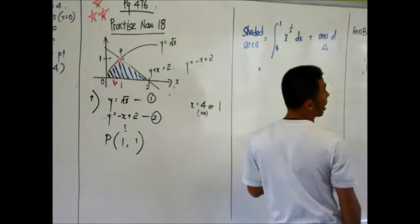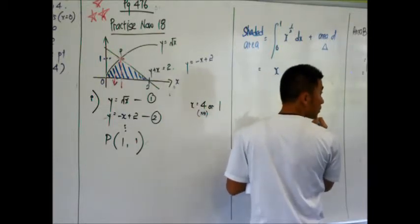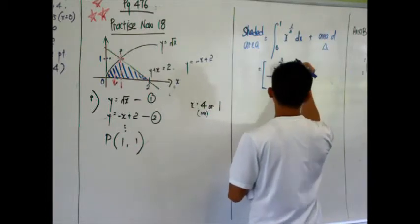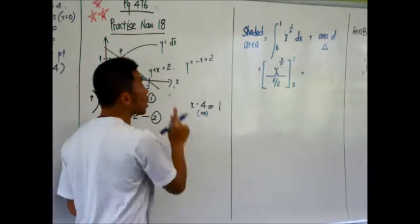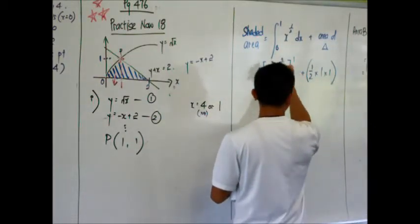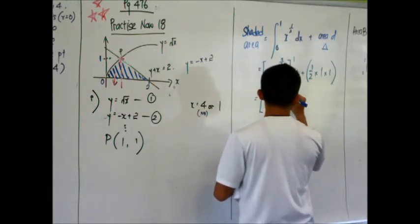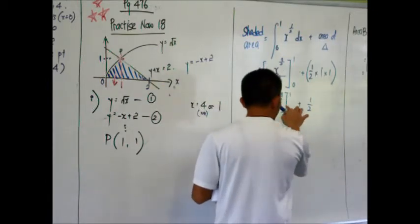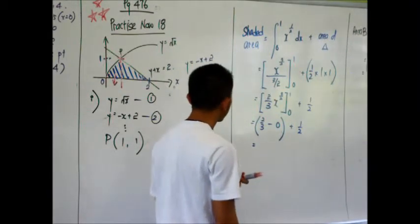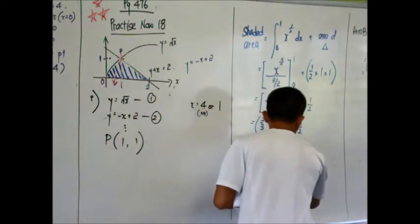How to do integration? How to integrate x to power of half? One and a half which is 3 over 2 over. Area of the triangle, we do our half times 1 times 1. We need to simplify this expression first. Divide by 3 over 2, this is 2 thirds. X to the power of 3 over 2. Substitute the values. No sweat.